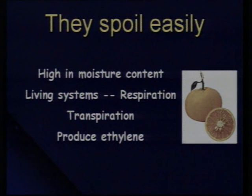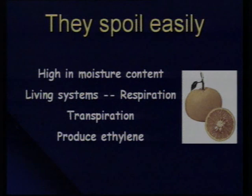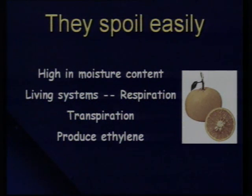They spoil easily because they have very high moisture content. When the moisture content is very high, the transpiration rate is very high. And since they are living commodities — living systems — they also undergo respiration. They produce a lot of heat. During this process, ethylene is also produced. Ethylene is a ripening hormone which helps the fruits to ripen. Because of these metabolic changes, fruits and vegetables can spoil very easily.